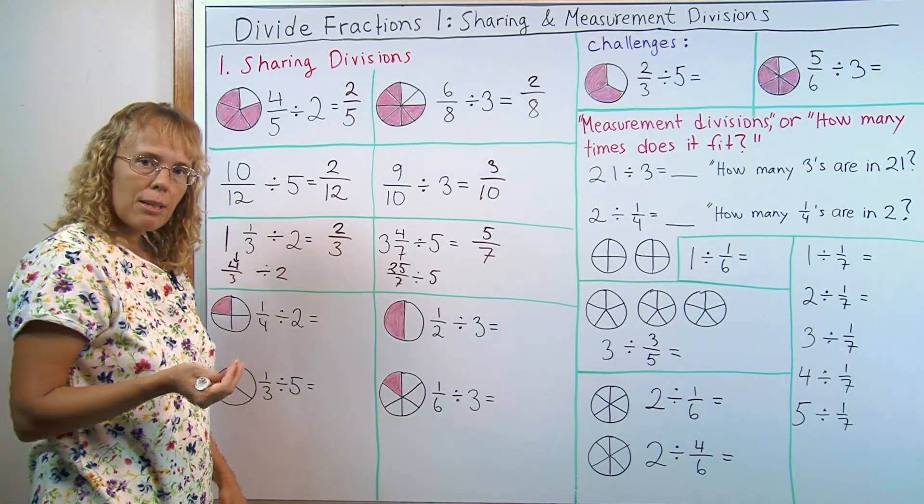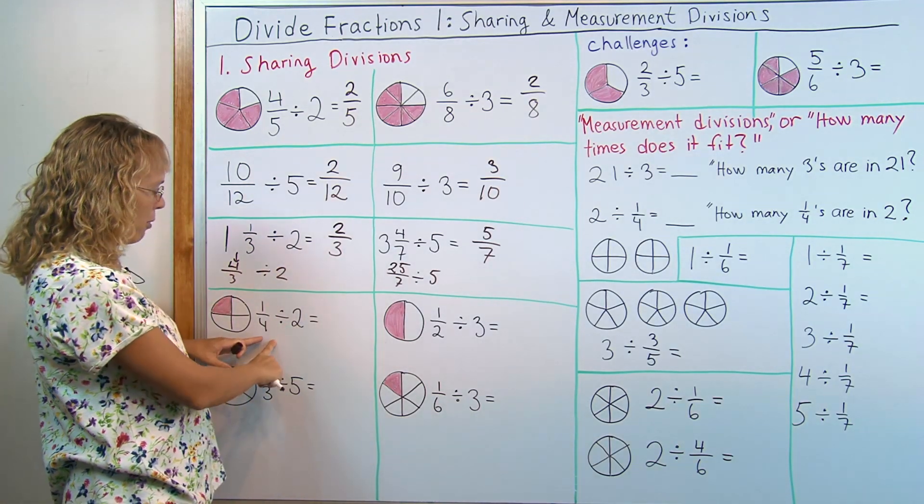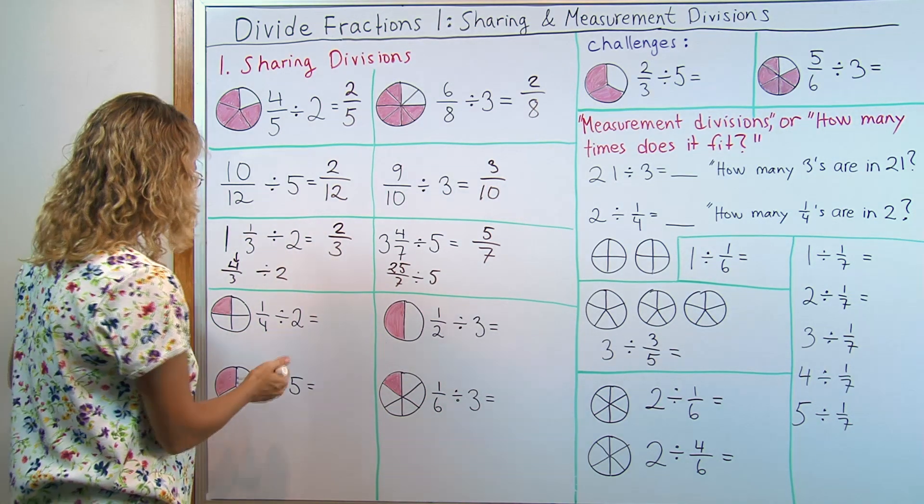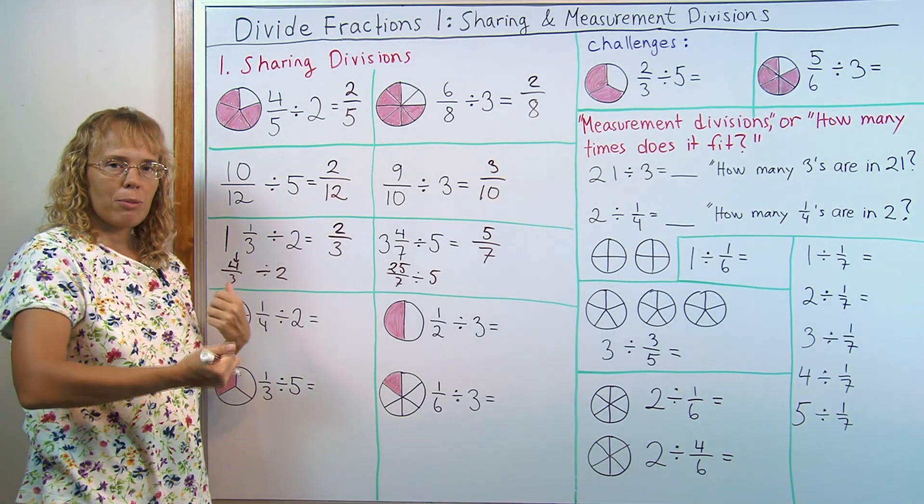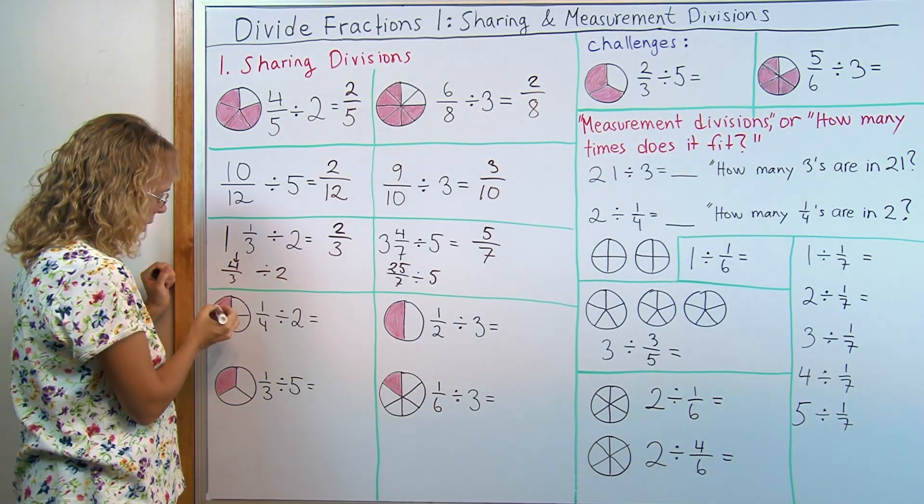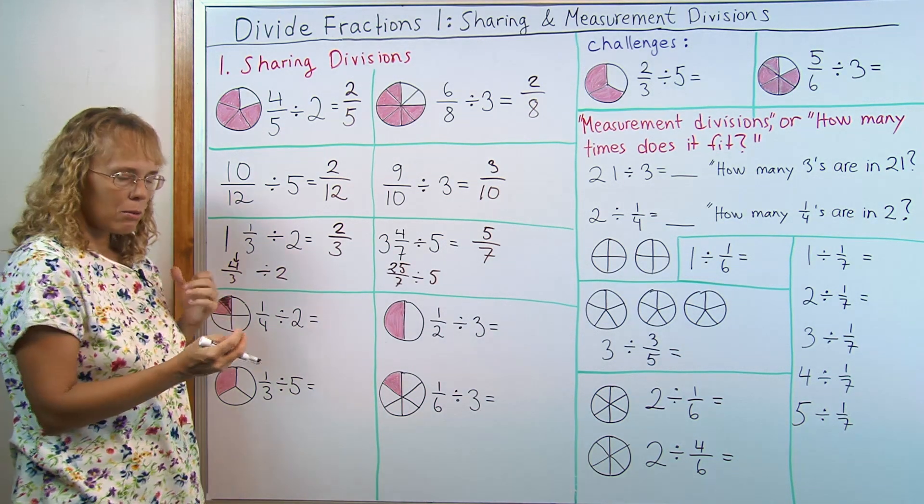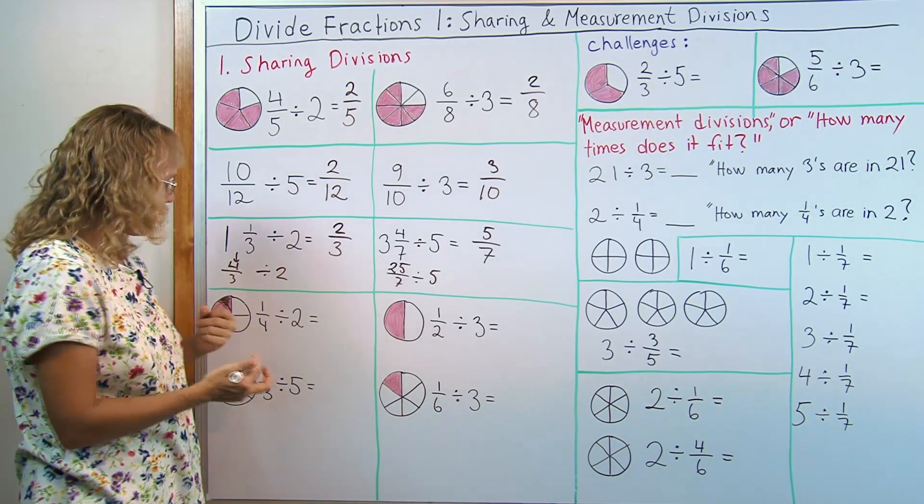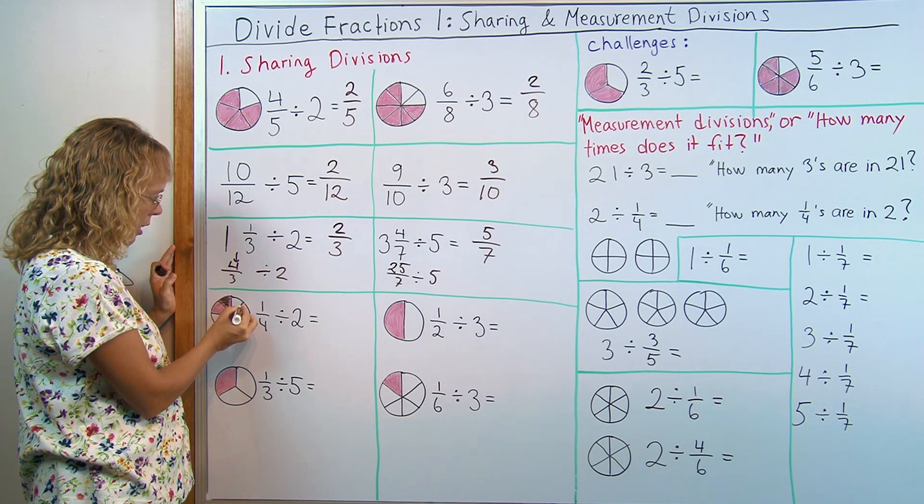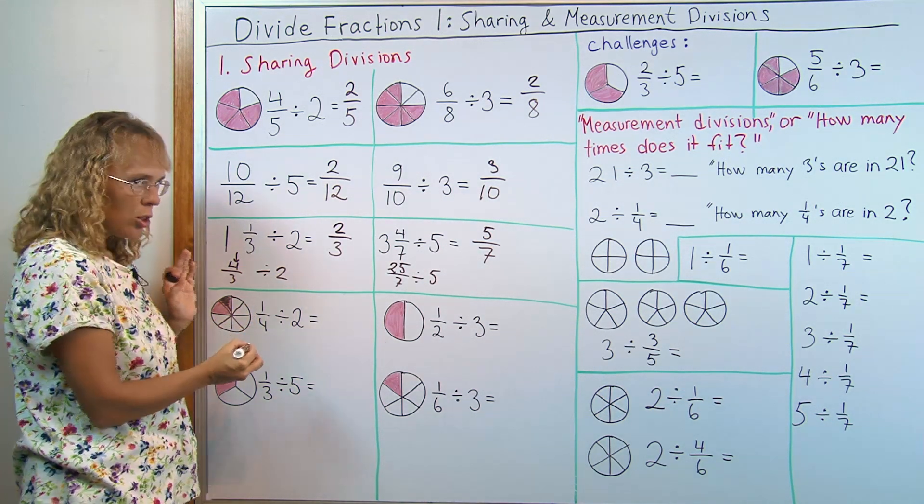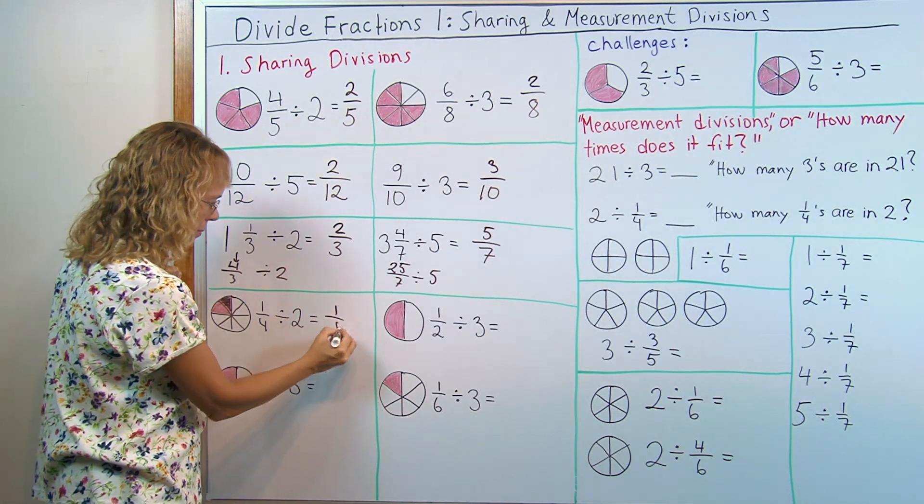Now let's look at some more where it doesn't look like an even division problem. Like for example one-fourth divided by two. We can use the same idea that if you have one-fourth of a pizza left and two people are sharing it, how much of the pizza does each person get? Each person will get this much. What size of slice is it? What fraction is that? If the students can't see it, divide every single other piece here into two and you'll see that it is now one-eighth.